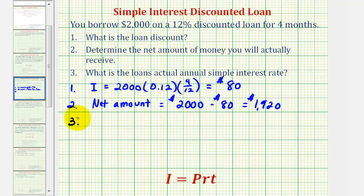And now for the last question, we want to determine what is the loan's actual annual simple interest rate, since we're only receiving $1,920, but we're paying twelve percent interest on $2,000.